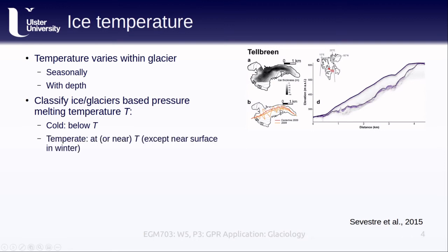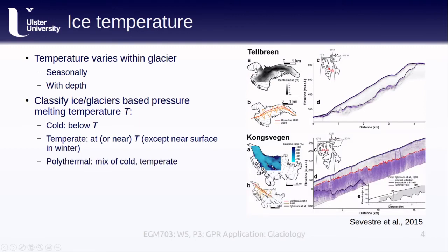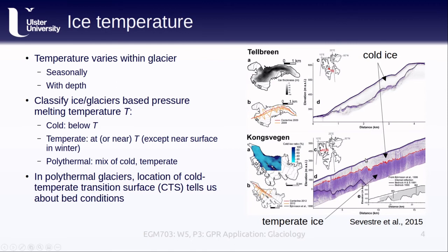Temperate glaciers are glaciers where the temperature is at or very near the pressure melting temperature, except near the glacier surface in winter. And finally, we can have a mix of cold and temperate ice, which is known as a polythermal glacier. Below a certain depth there is a comparatively strong reflectance all throughout the glacier, which is indicative of the presence of liquid water, meaning that the ice is temperate. The red line in the radargram for Kongsvegen here indicates the location of the cold-temperate transition surface, or CTS.